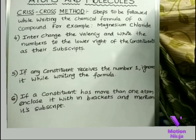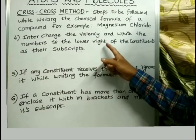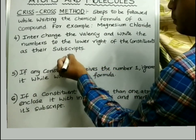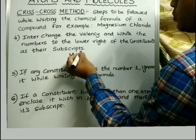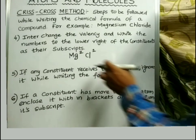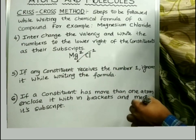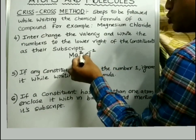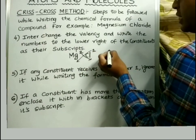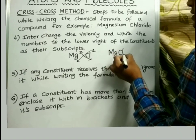Step 4: interchange the valency numbers and write them to the lower right of the constituents as subscripts. In our example, magnesium has valency 2 and chloride has valency 1. After interchanging, 1 should be written as the subscript of magnesium and 2 should be written as the subscript of chlorine.